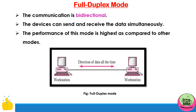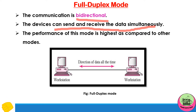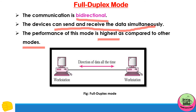The final mode is full-duplex mode. Here the communication is bidirectional and devices can send and receive data simultaneously — you don't need to pause and then listen from the receiver. The performance of this mode is the highest compared to other modes. As shown in the figure, it is bidirectional at all times.